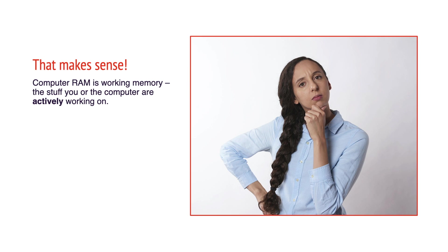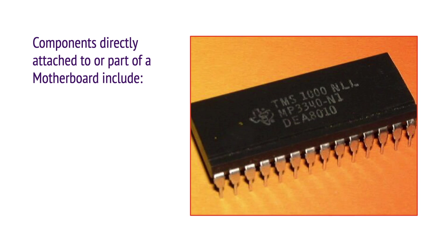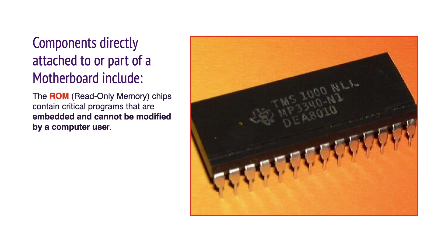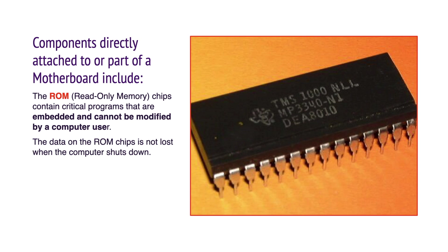Computer RAM is working memory — the stuff you or the computer are actively working on. Another component on the motherboard is ROM, which stands for read-only memory. ROM chips contain critical programs that are embedded and cannot be modified by a computer user. The data on the ROM chips is not lost when the computer shuts down.